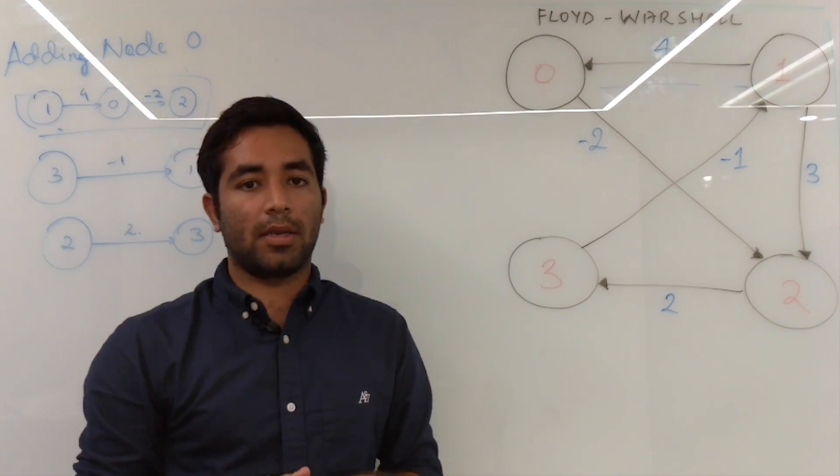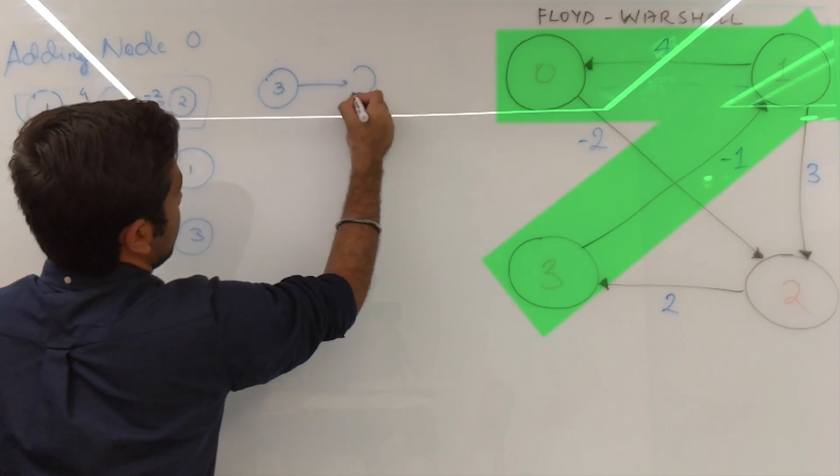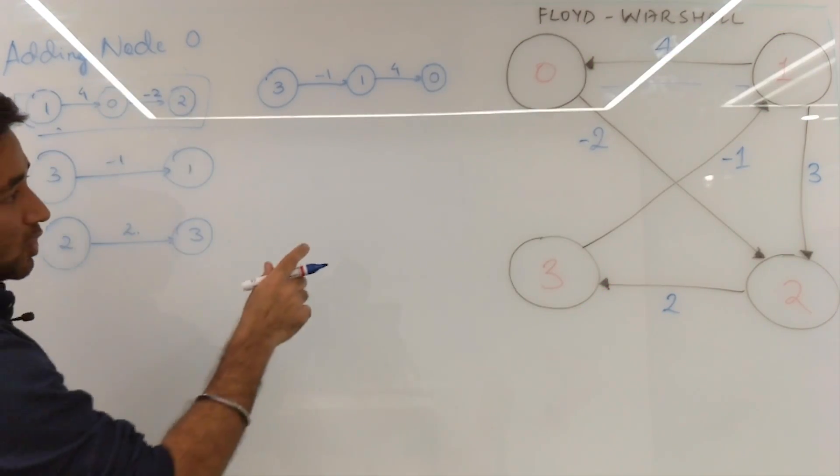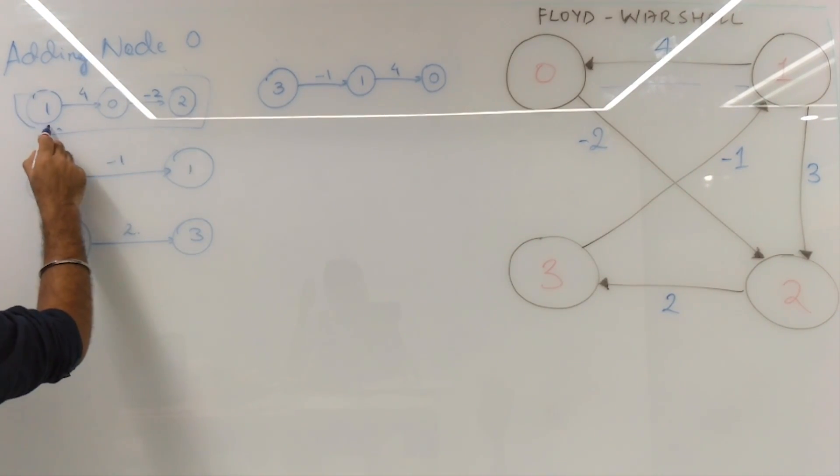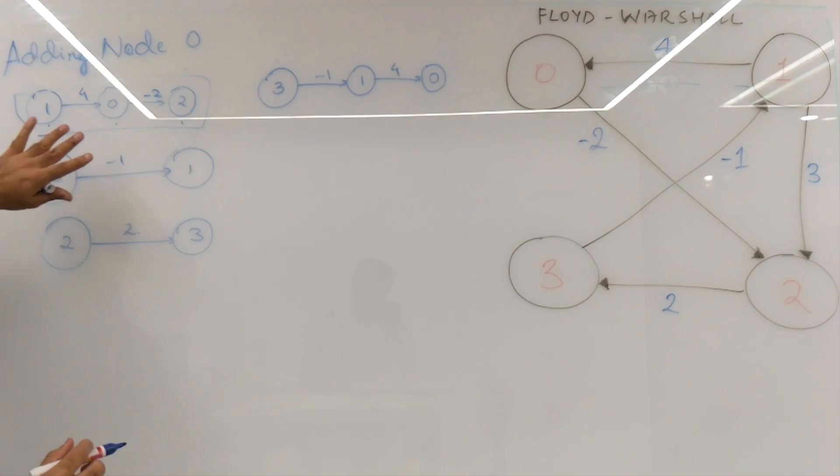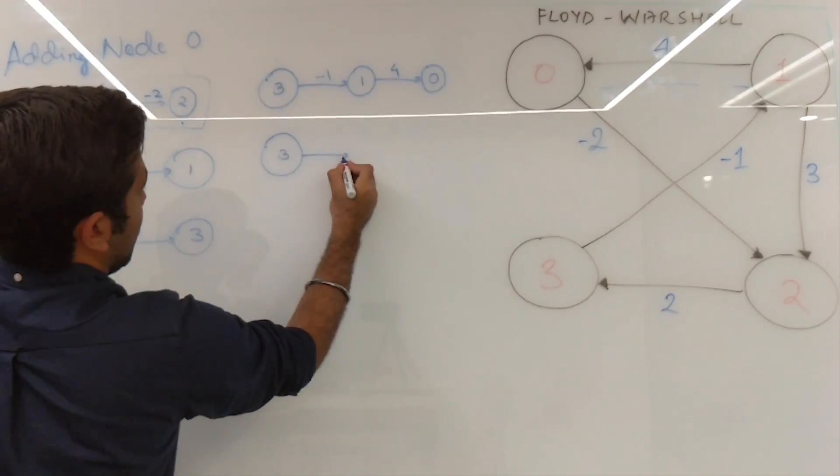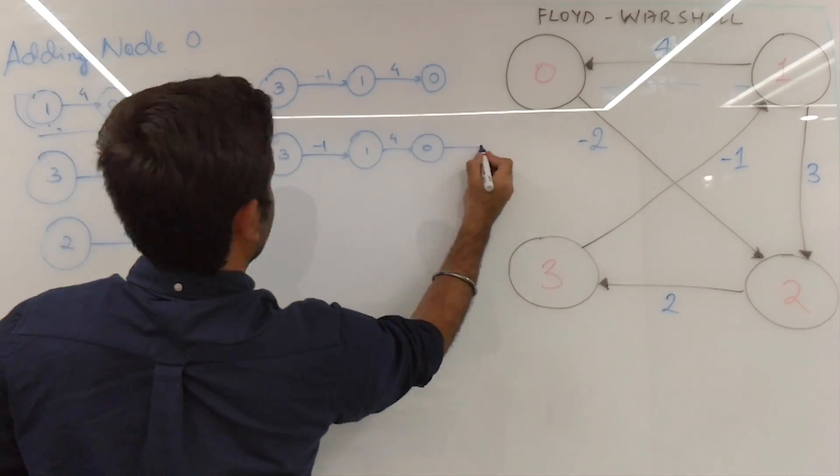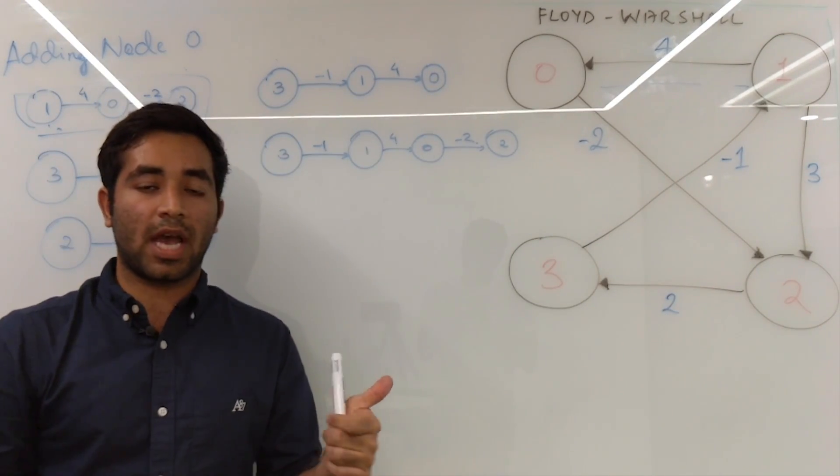Now we add node one and what we finally get is three connecting to one and going to zero. This is one of the paths which passes through one and another path which traverses to two, as we saw before, is one is connected to zero and connected to two. This is the fastest way in which you can reach from one to two. And similarly we will extend this to incorporate node two.